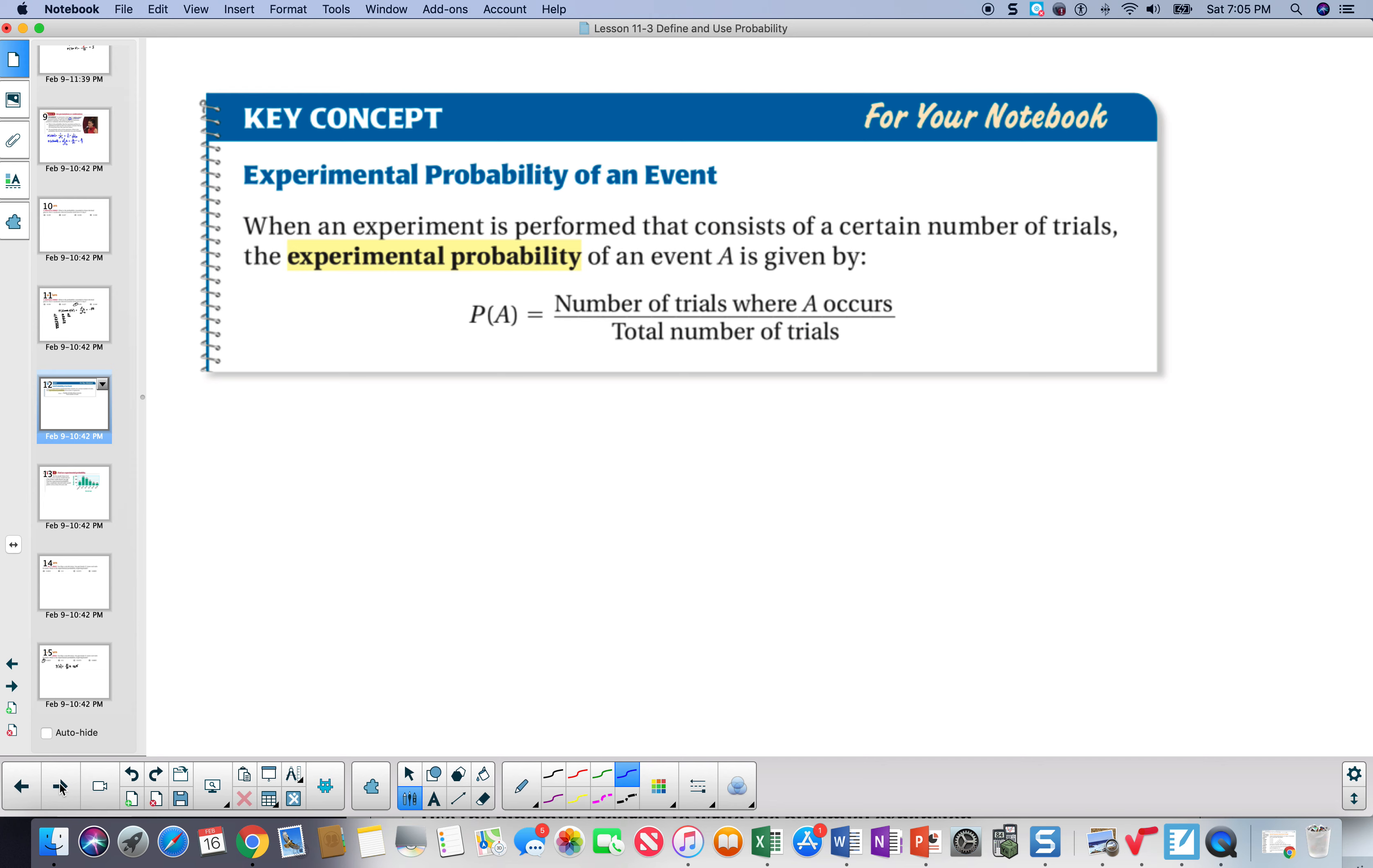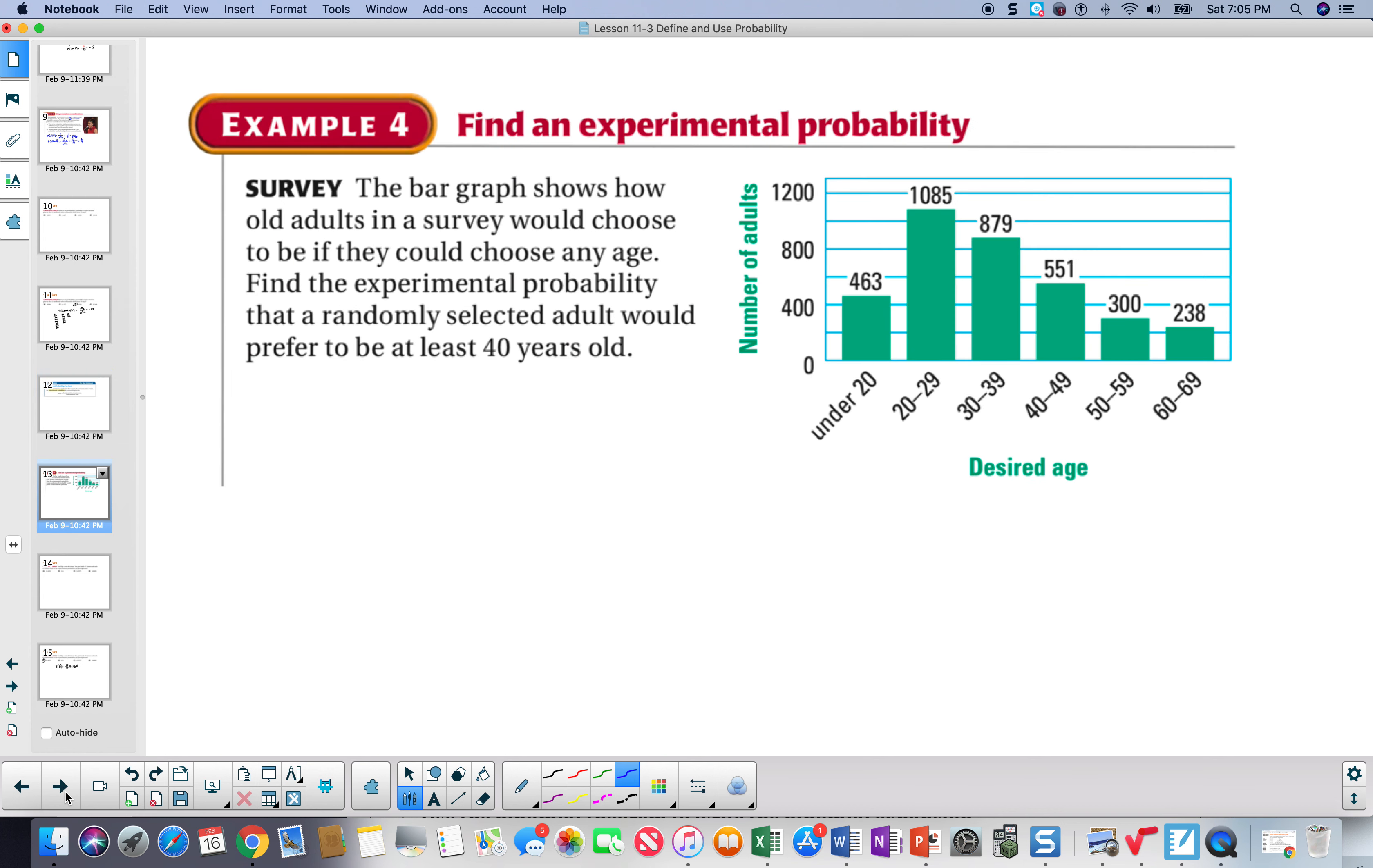Let's take a look at experimental probability. This is when you perform an experiment. And we take a look at the number of trials where A occurs out of the total number of trials. In this experimental probability, we figure out the number of adults and their ages. And this is all the numbers that we get out of there. So, we want to find the probability of someone that's at least 40. So, we want the total number of people, number of adults. So, we're going to take all of these numbers here. And that will give us our total. And our total is 3,516.